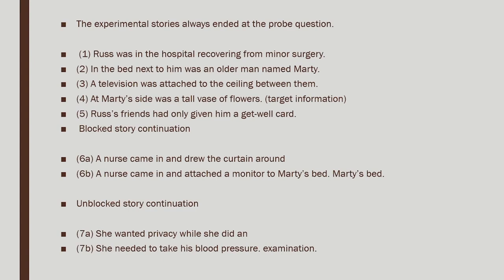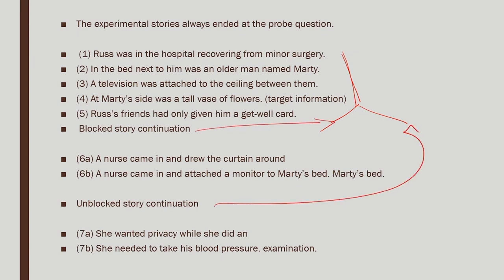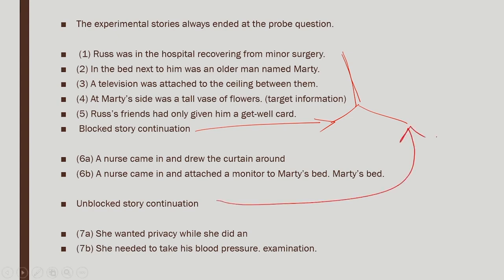They created stories where subjects read line by line. The story went: 'Russ was in the hospital recovering from minor surgery. In the bed next to him was an older man named Marty. A television was attached to the ceiling between them. At Marty's side was a tall vase of flowers. Russ's friends had only given him a get-well card.' Then there were two types of continuations: a blocked version where a nurse came in and drew the curtain for privacy during an examination; and an unblocked version where the nurse came in and attached a monitor to take blood pressure.